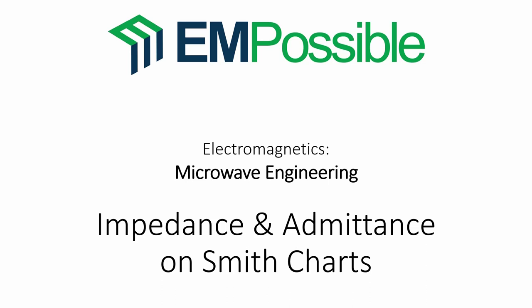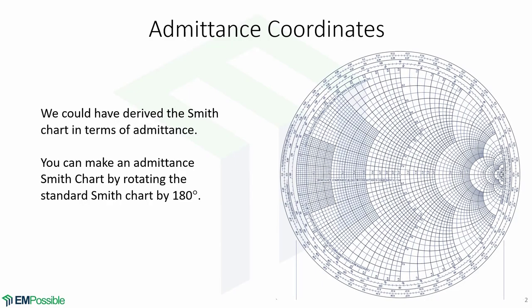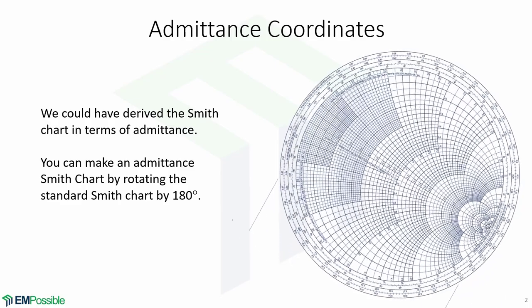Hello and welcome to the microwave engineering lecture titled 'Impedance and Admittance on Smith Charts.' In the previous lecture, we derived the Smith chart in terms of impedance. We could have also derived the Smith chart in terms of admittance. However, from the impedance Smith chart, deriving the admittance is trivially easy — we can just make an admittance Smith chart by rotating the standard Smith chart by 180 degrees.